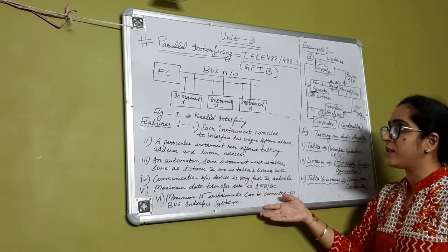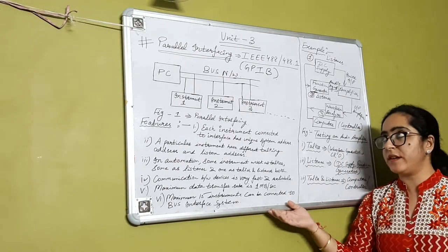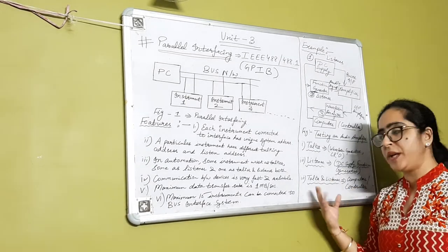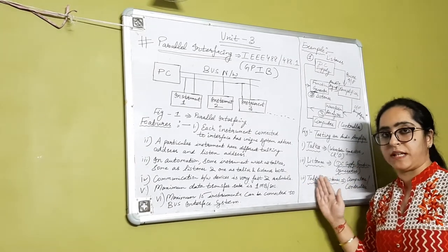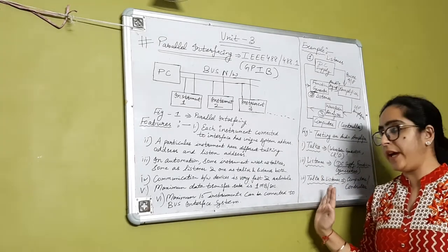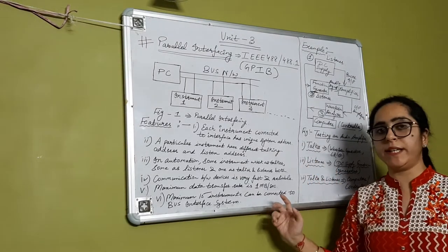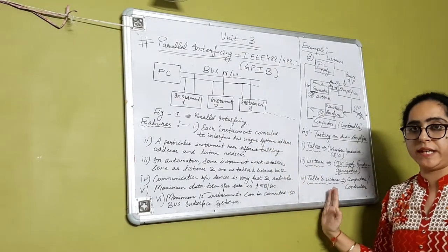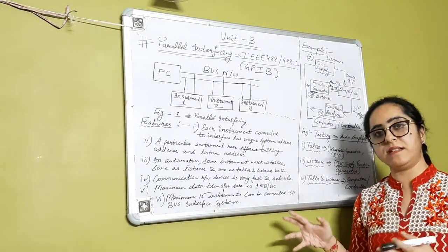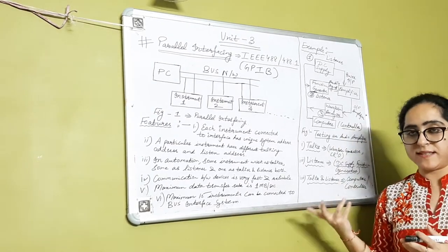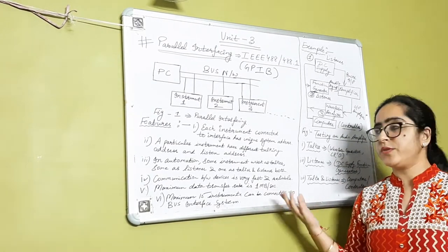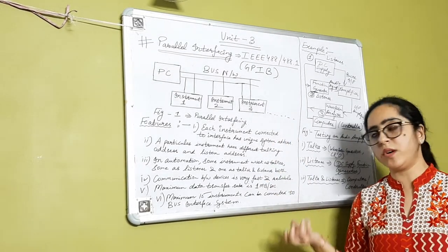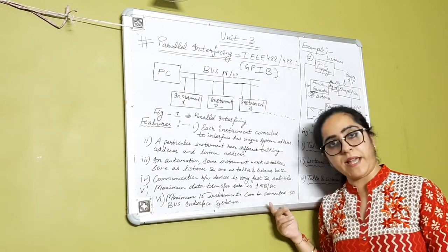That's why we use the IEEE 488 bus, which is the General Purpose Interface Bus. With more examples and its pin diagram, I will start with the next class. This is all for today's class. I hope you got the idea of how this parallel interfacing can be done with the help of the talker, listener, and the controller. There are short programs also that we will discuss later on. Thank you.